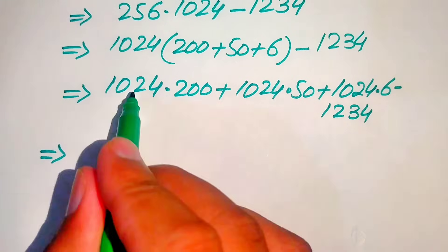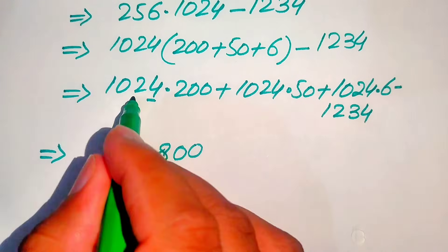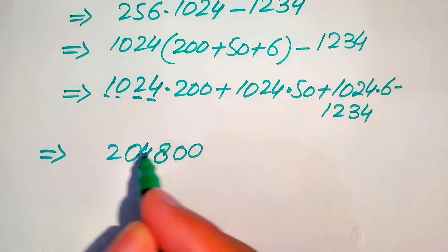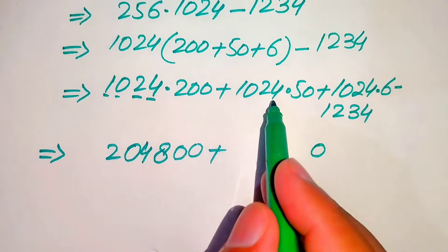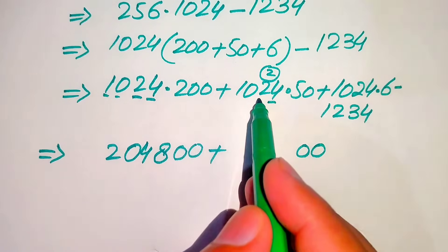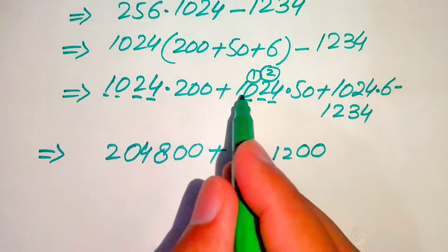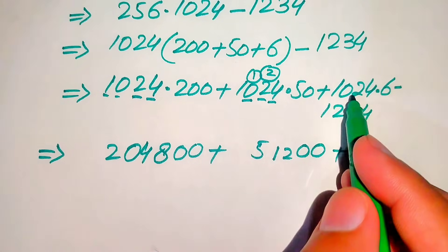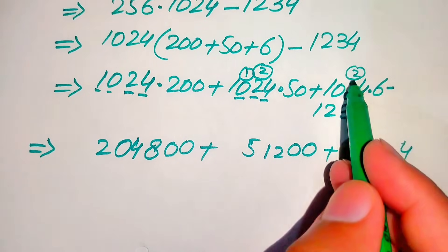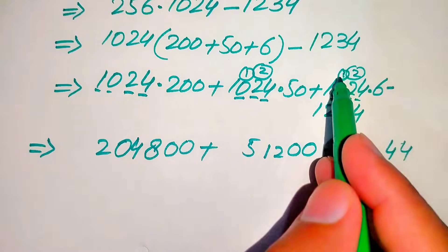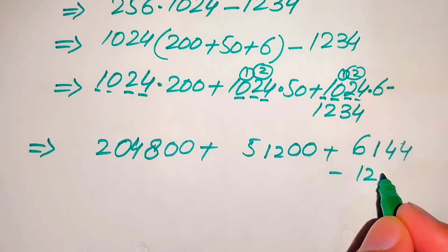We carry out the multiplication term by term. For 1024 × 200: we append two zeros and multiply — 2×4=8, 2×2=4, 2×0=0, 2×1=2, giving 204800. For 1024 × 50: 5×4=20 (write 0 carry 2), 5×2=10+2=12 (write 2 carry 1), 5×0=0+1=1, 5×1=5, giving 51200. For 1024 × 6: 6×4=24 (write 4 carry 2), 6×2=12+2=14 (write 4 carry 1), 6×0=0+1=1, 6×1=6, giving 6144.